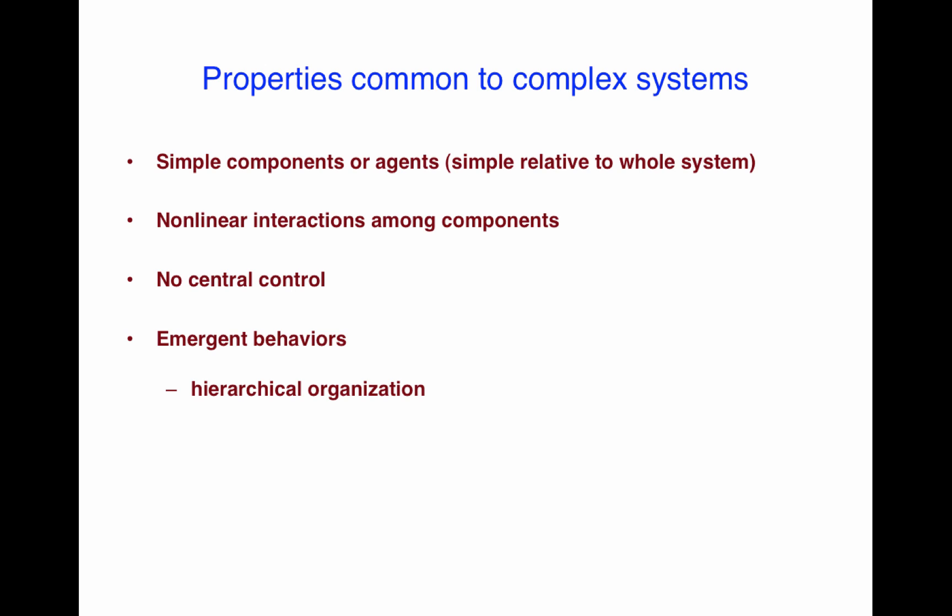The first one might be called hierarchical organization. This refers to things like biological organisms, which have a hierarchical structure ranging from cells to organs to body-wide systems to the whole body, and even on to colonies and society. How such hierarchies emerge in the first place, and how the different levels interact, are important questions for the field of complex systems. In this course, we'll see some examples of different kinds of hierarchies.